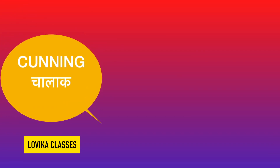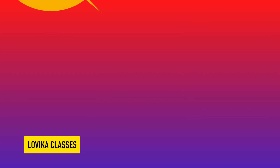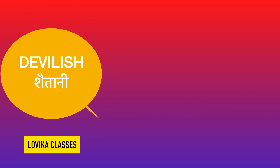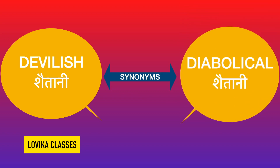Cunning means chalak — fox is a cunning animal, chalak hoti na lomdi. Its synonym is crafty, also meaning chalak. Devilish means shaitani — its synonym is diabolical, also meaning shaitani.